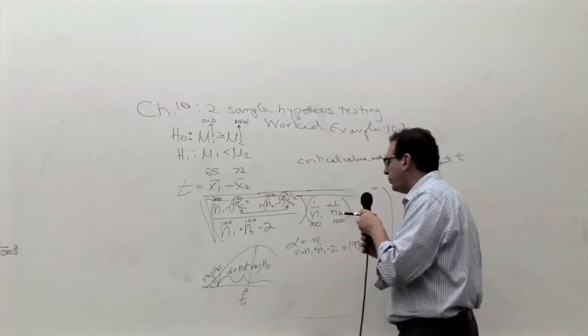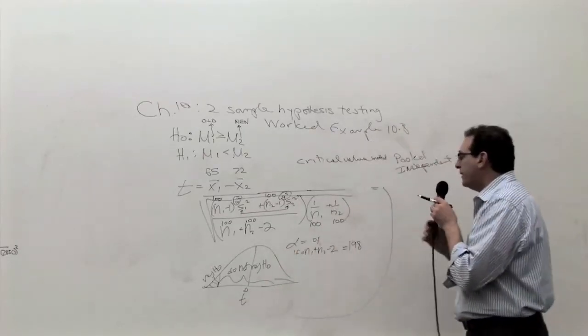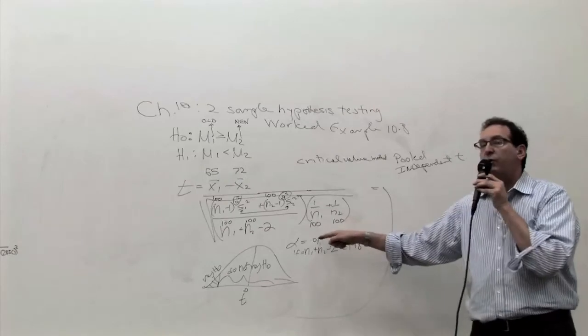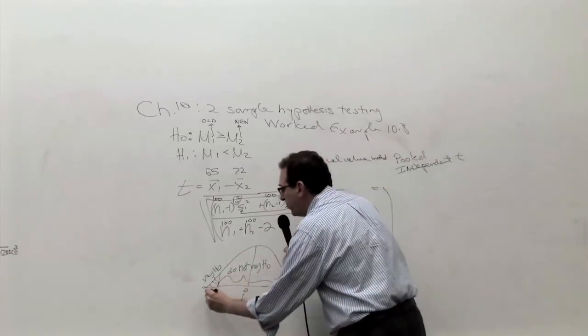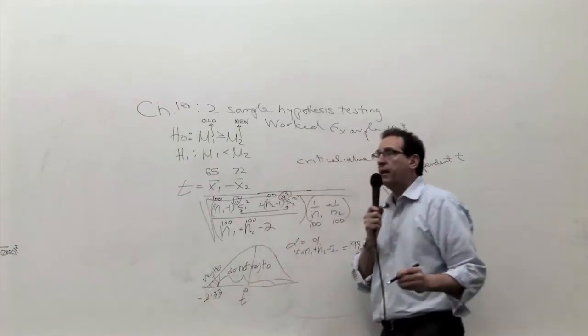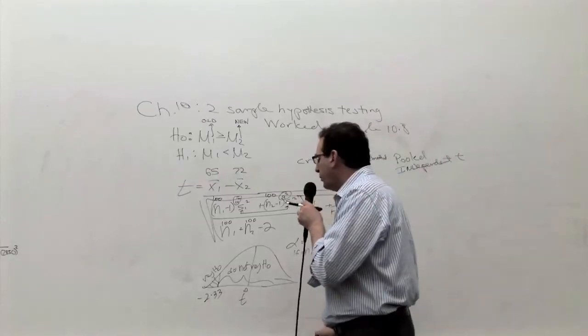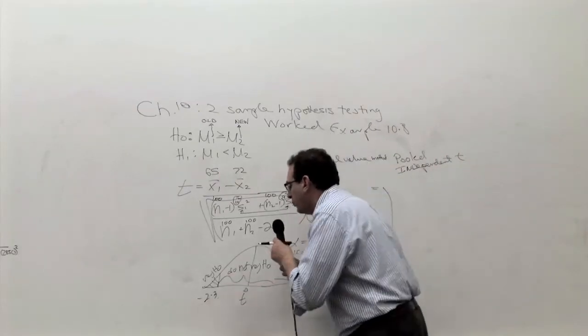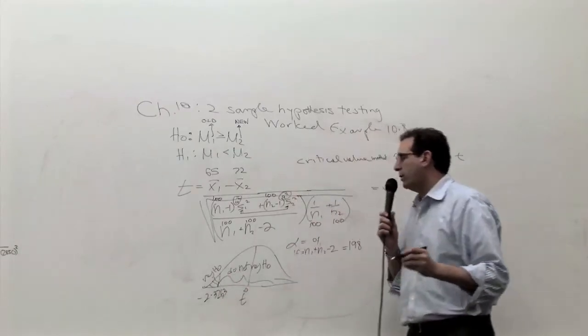And now we've got to go back to the table. Instead of looking at the 0.005, now we're looking at the 0.01 column, and that's going to be 2.33 or something like that. So it's minus 2.33. Laura, do you want to look it up again? Or anybody else can look it up? 2.326. So it's minus 2.3263.